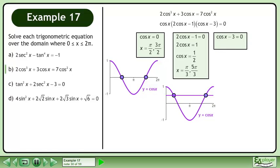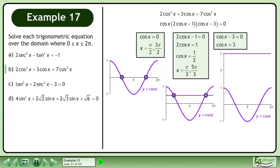Now solve cosx minus 3 equals 0. This becomes cosx equals 3. There is no solution.